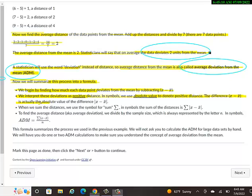We interpret these deviations as a positive distance. In symbols, we use absolute value to denote positive distance. The difference, x minus x bar, is actually the absolute value of the difference. So changing it from parentheses to bars just means if I get a negative, I'll change it to a positive. When we sum the distances or add them together, we use the symbol for sum, which is the Greek symbol sigma. In the symbols, the sum of the distances is... So this little formula here just means add together all the distances.